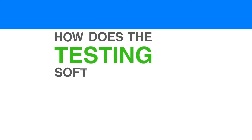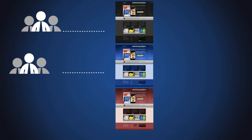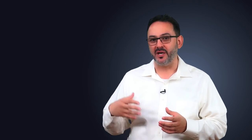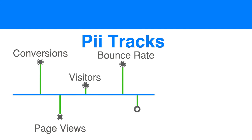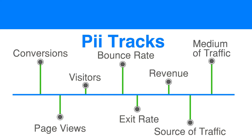How does the testing software determine the winning design? At its core, A-B testing software tracks the number of visitors coming to each page in an experiment and the number of conversions each design generates. Sophisticated A-B testing software tracks much more data for each variation. For example, in our Pi testing software, we track the number of conversions, page views, visitors, bounce rate, exit rate, revenue, the source of traffic, and the medium of traffic.